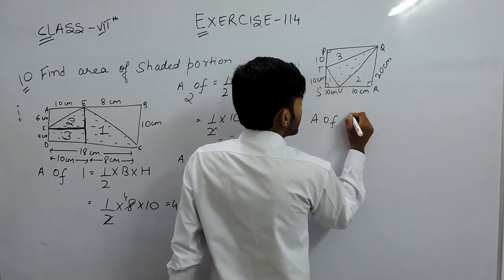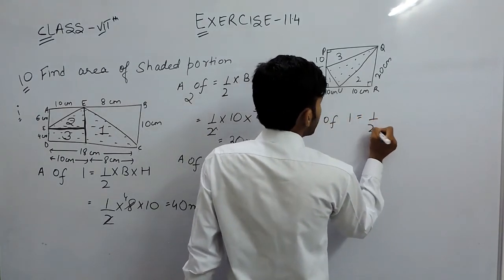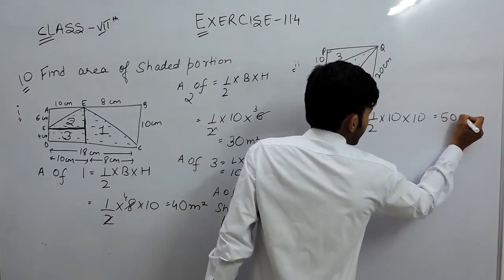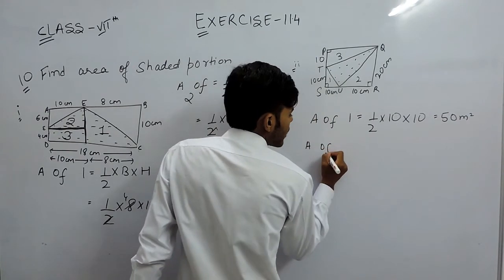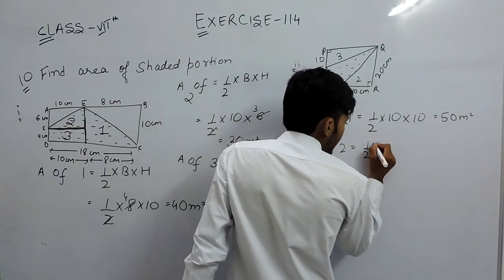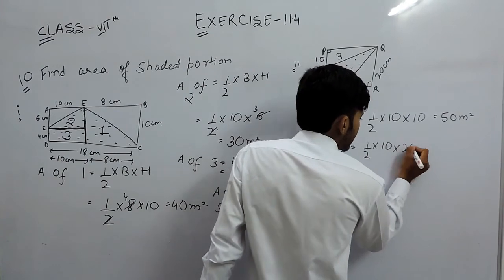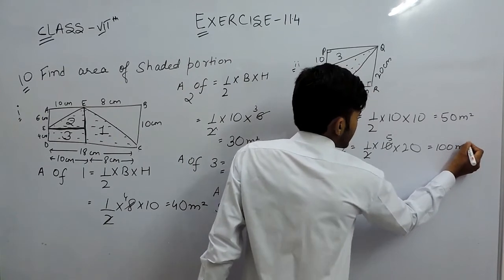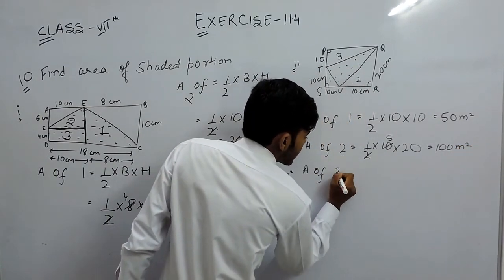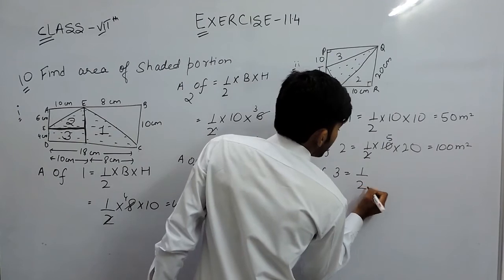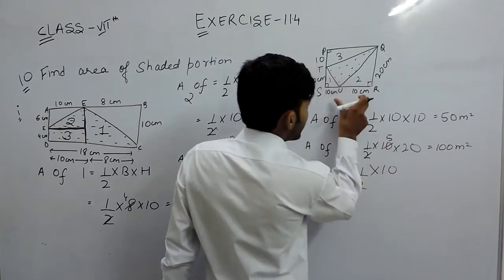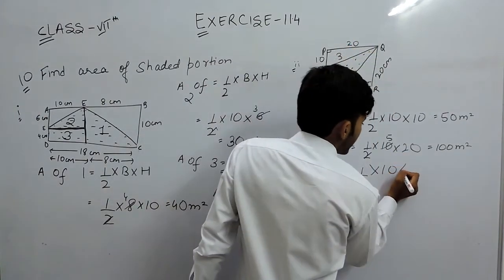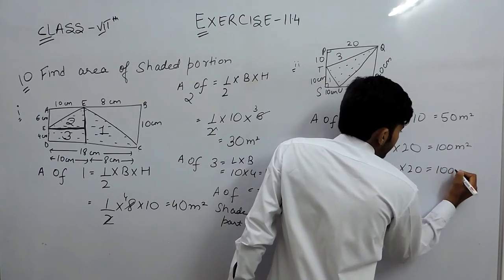So area of figure 1 will be equal to 1/2 into 10 into 10, that will be equal to 50 square centimeters. Area of figure 2 will be equal to 1/2 into 10 into 20, that will be equal to 100 square centimeters. And the area of figure 3 will be equal to 1/2 into 10 into 20, so that is again 100 square centimeters.